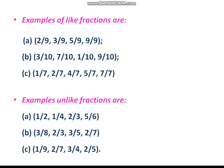In the second example: 3 by 10, 7 by 10, 1 by 10, 9 by 10. Next, the third: 1 by 7, 2 by 7, 4 by 7, 7 by 7. All these are examples of like fractions where the denominator is the same.